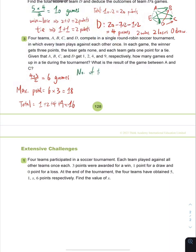is going to be equal to 18 take away 16, because for each tie there's going to be one less than the maximum number of points. So if the number of points is two less, then there's going to be two ties. Now we are trying to see what is the result of the game between A and C.